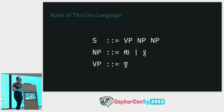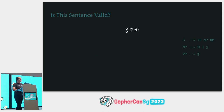These are the rules for Lian. Now that we know the rules of this language, the game we will play is whether a sentence is valid or not. Let's play along. Is this sentence valid? No. Is this sentence valid? No. Is this sentence valid? Yes.